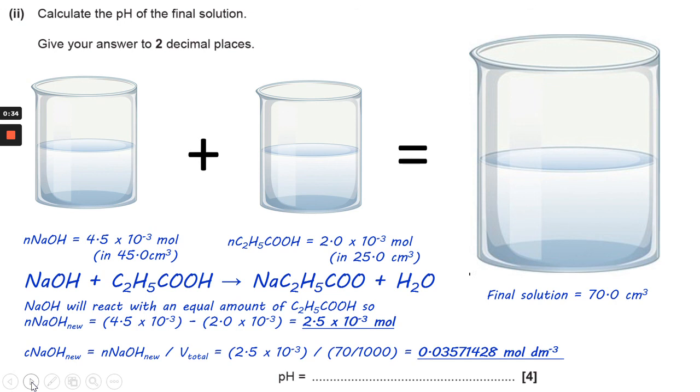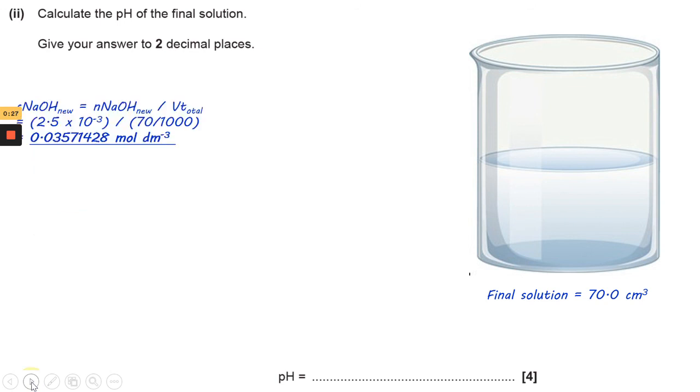So its concentration is moles over volume, the volume being 70 cm cubed this time. That gives you 0.03571428. So the concentration is that value. You now need to work out the pH.